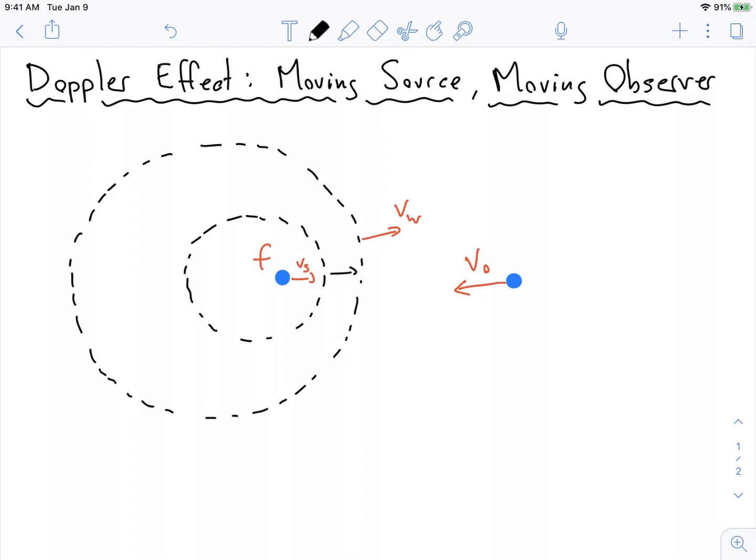The moving source comes from the fact that these wavelengths get either squished or lengthened because of the moving source. So there's an effect in the frequency shift that an observer will hear, just from the fact that this thing is moving. Let's account for that.